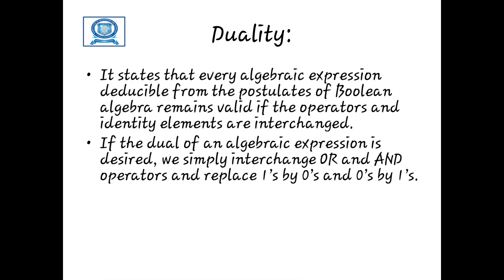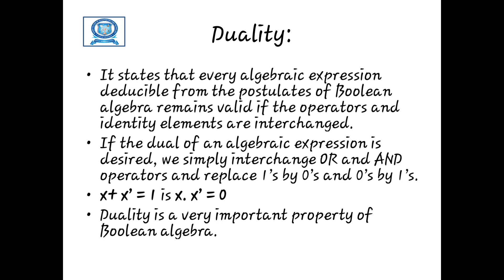The next property is called the duality property. If x is a binary number, then x-dash is its complement — if x is 1 then x-dash is 0, and if x is 0 then x-dash is 1. According to the duality property, x plus x-dash is equal to 1, and x dot x-dash is equal to 0. This property is very important in Boolean algebra.